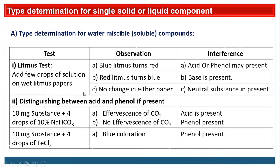In this way, by using a simple litmus test and separation of acid and phenol, we can find out which type the given organic compound is — acid, phenol, base, or neutral.